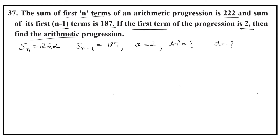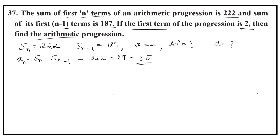We know one relation: An is equal to Sn minus S(n-1). By substituting the values, Sn is 222 and S(n-1) is 187. That gives us 222 minus 187, which equals 35. So the nth term is 35.